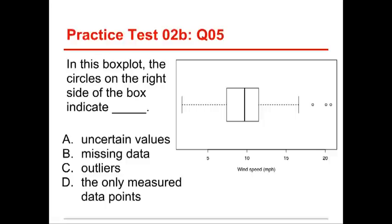Number five, last one in the practice test. In this box plot, the circles on the right side of the box indicate what? Uncertain values, missing data, outliers, or the only measured data points? Well, on this one, the answer is C, outliers.